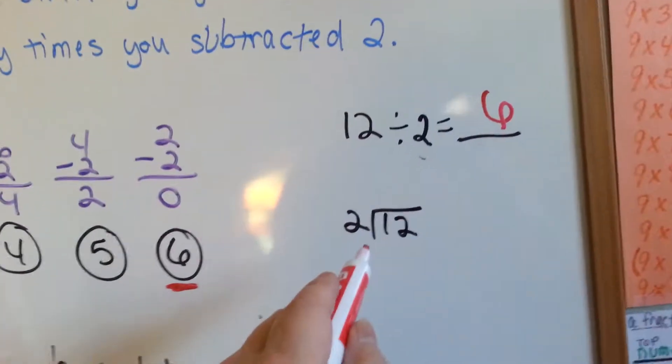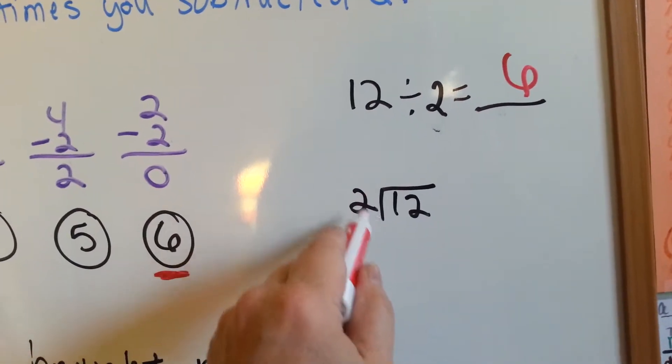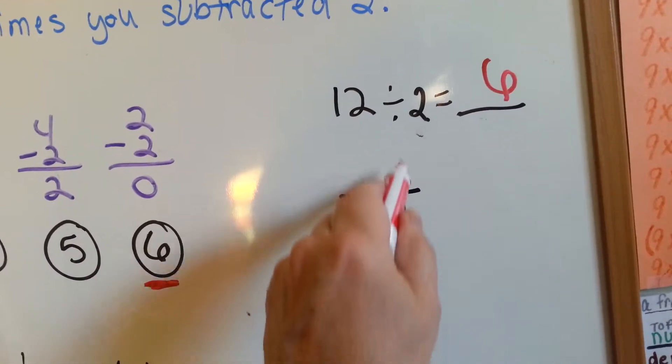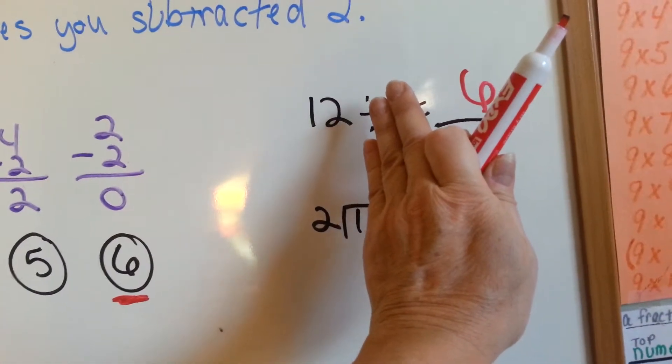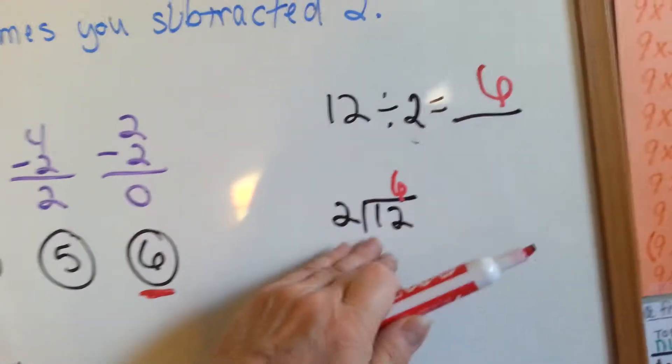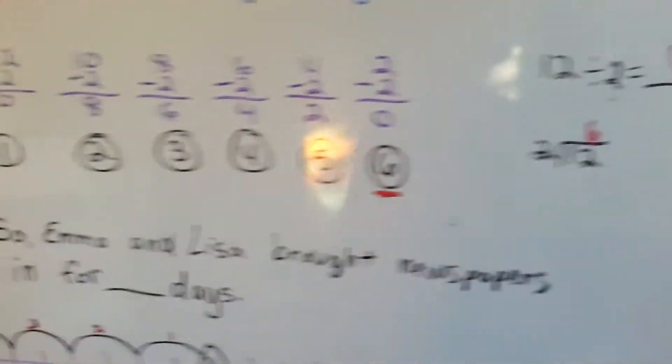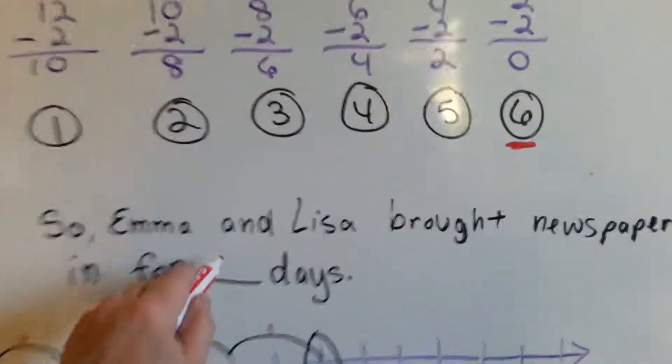And if you do it in the long division style, two goes into twelve six times. And the six would go above the ones column here, because you're not saying two goes into one, see? Then it would go above the one. You're saying two goes into twelve, so it has to go above the two of the twelve, okay? So, Emma and Lisa brought newspapers in for six days.